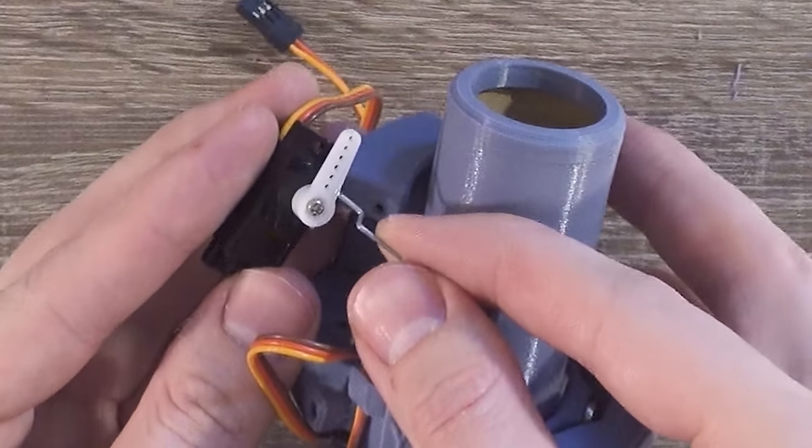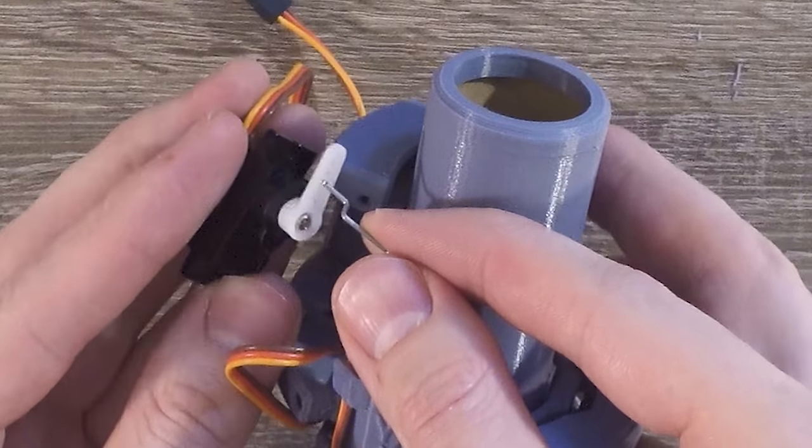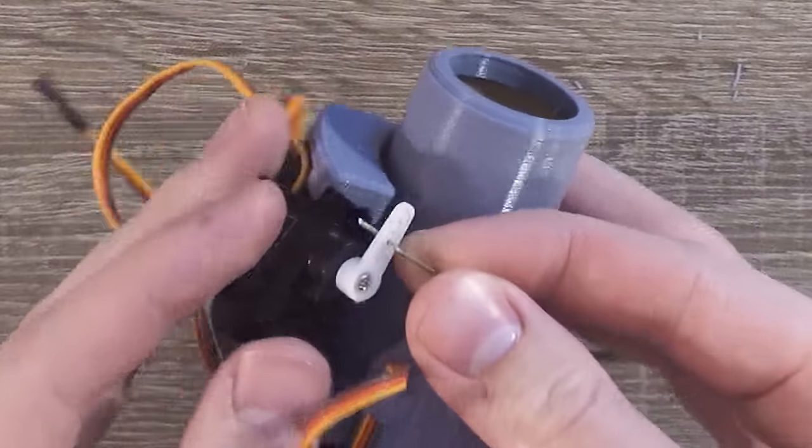Once again count from the center one, two, three, and insert the pushrod there. This time, the servo cable and arm should be pointing upward.